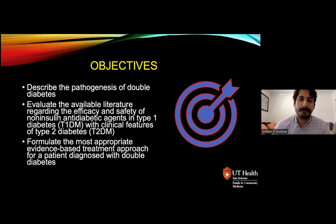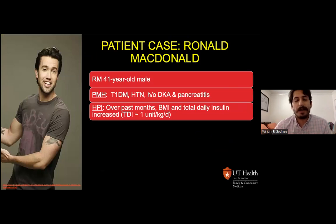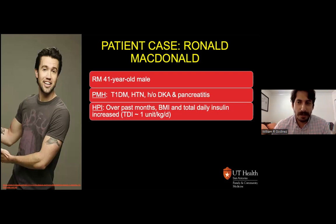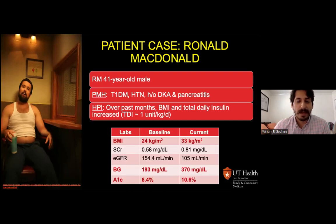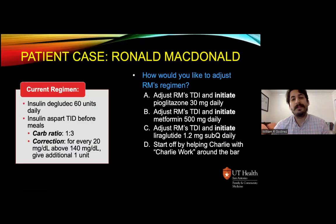Once comfortable with that information, we'll formulate the most appropriate evidence-based treatment approach for a patient diagnosed with double diabetes. We have RM, a 41-year-old male with a past medical history of type 1 and hypertension. He was diagnosed with type 1 when hospitalized for DKA at a young age, and since then has been hospitalized for DKA and pancreatitis back in 2018. Since the COVID pandemic he's been eating more and sitting around a lot. His sugars have been significantly higher, with a total daily insulin of about one unit per kg per day, and his A1C increased to 10.6%.